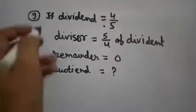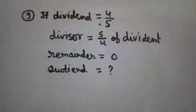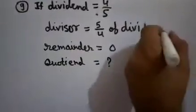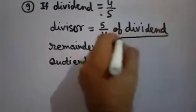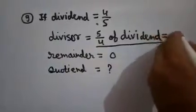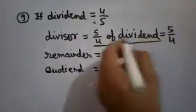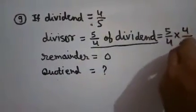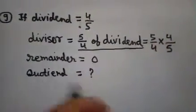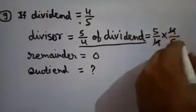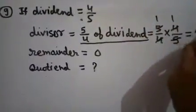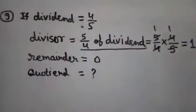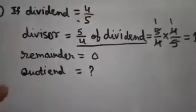The next question: if the dividend is 4/5 and the divisor is 5/4 of the dividend. Underline this — 'five-fourths of the dividend' means multiply by 5/4. So dividend is 4/5, and divisor is 4/5 × 5/4, which gives 1. The actual divisor is 1.